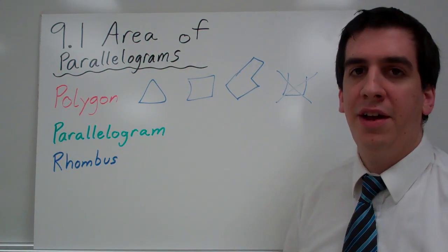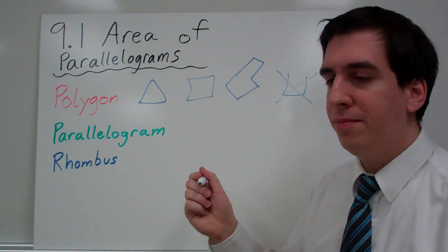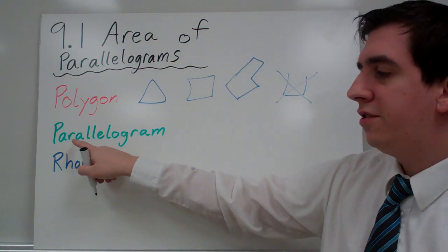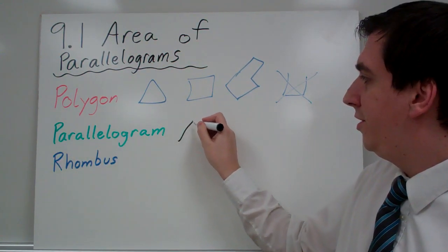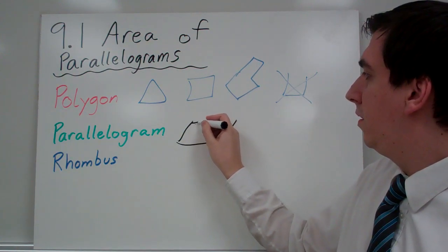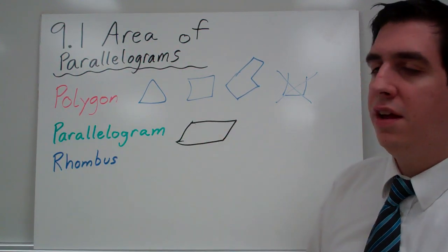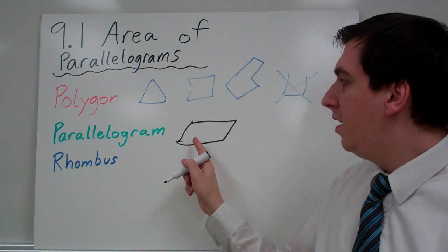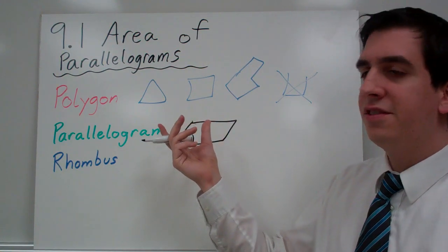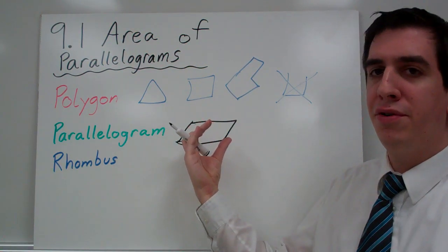A certain type of polygon that we'll talk about is a parallelogram. A parallelogram is two opposite sides that are parallel to each other. And it looks just like that. It's also kind of like a rectangle that got blown over by the wind.